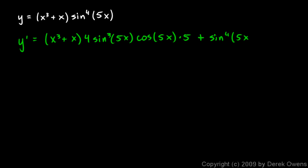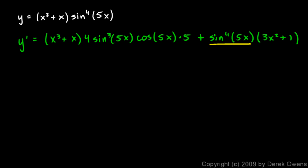Then we add plus the second, sine to the fourth of 5x, times the derivative of the first, which is 3x squared plus 1, applying the power rule to each term. If you wanted to, you could factor out sine cubed of 5x from each term since both contain at least that power of sine. But we'll stop there — that's the application of the product rule to this example.